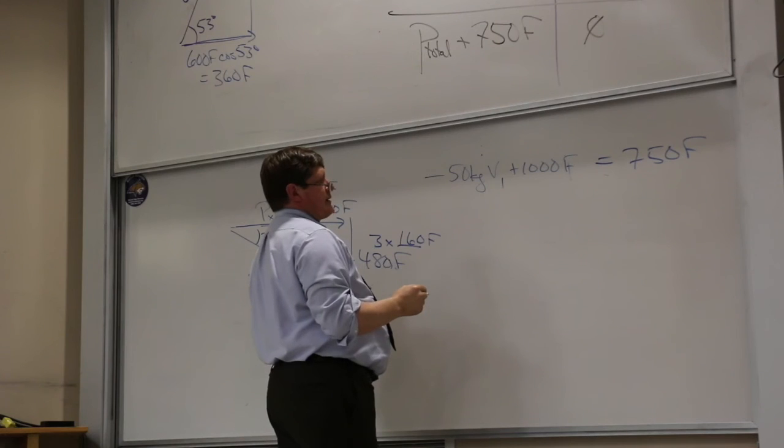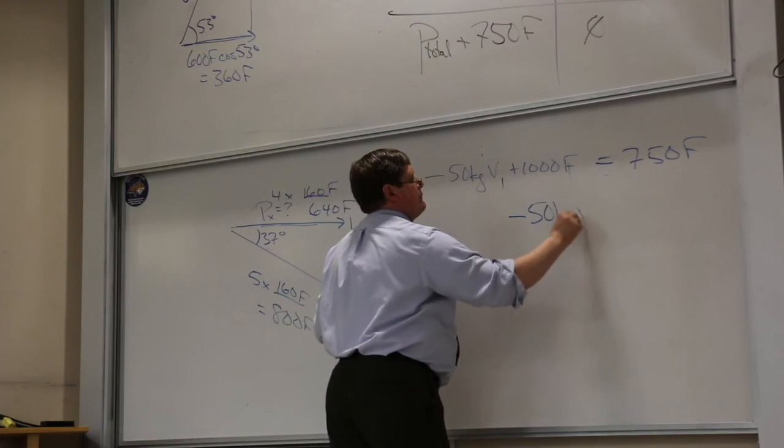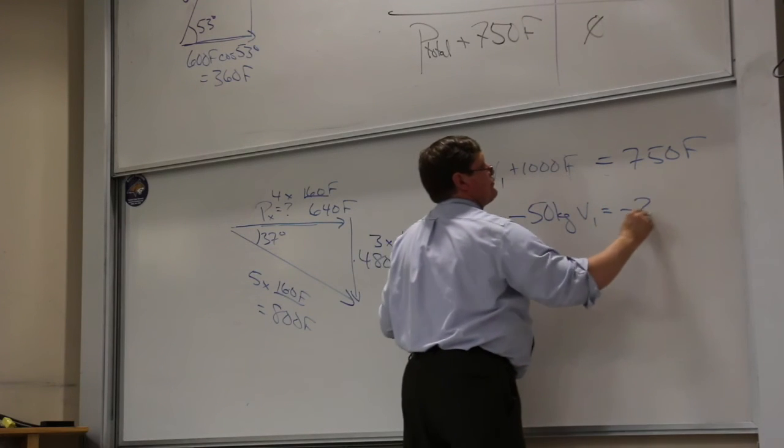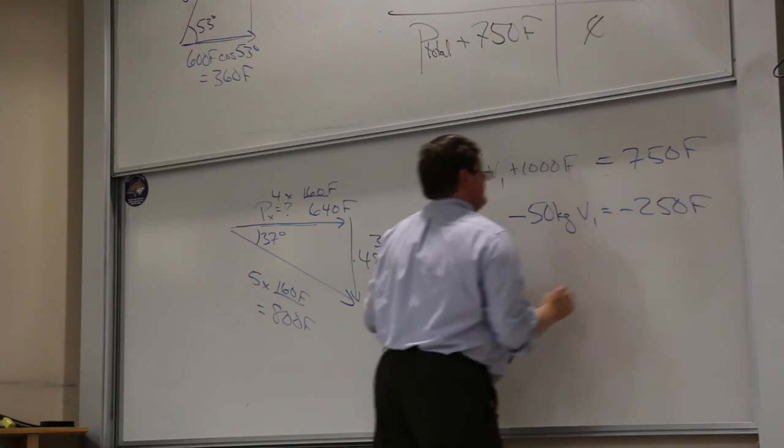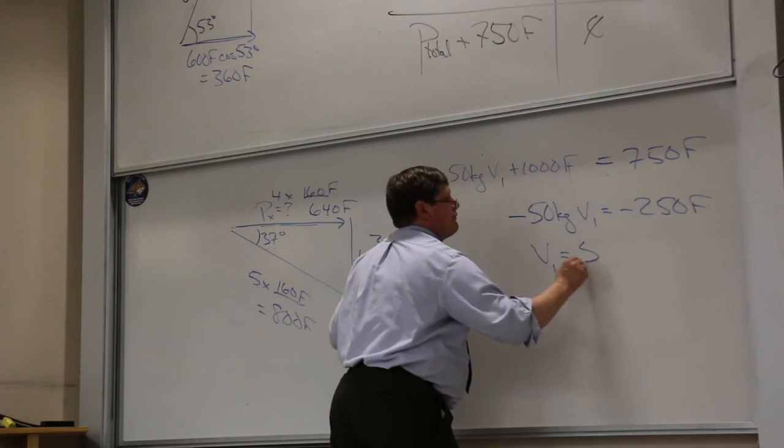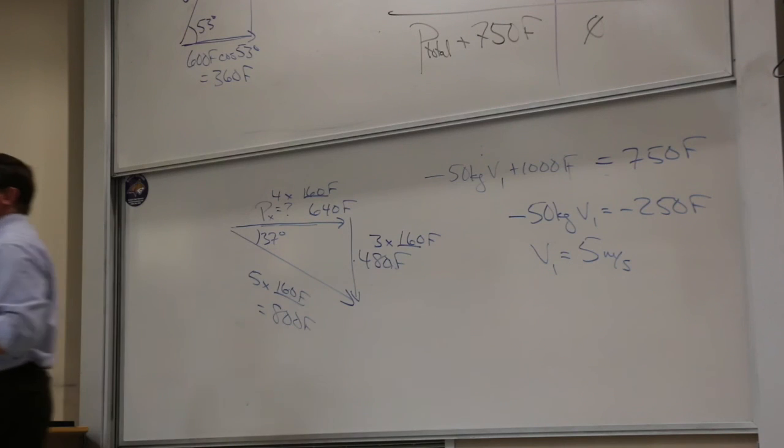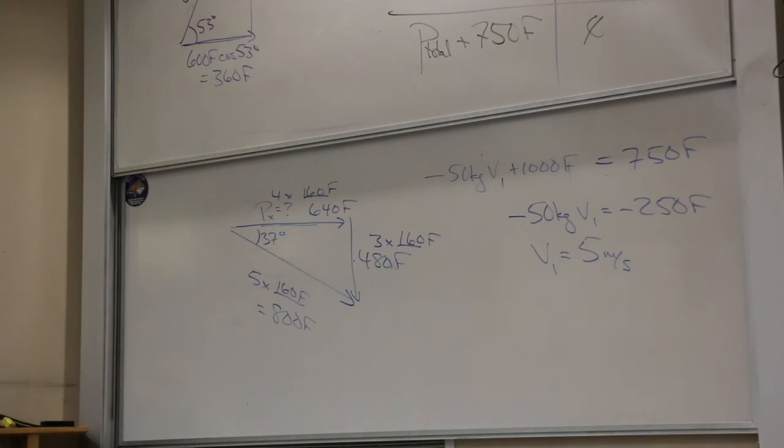If I subtract 1,000 from both sides, I get minus 50 times V1 is equal to minus 250 franc high. Or V1 is going to be 250 over 50, or 5 meters per second. We already know it's to the left because we put the minus sign in all the way at the top. The speed is 5 meters per second.